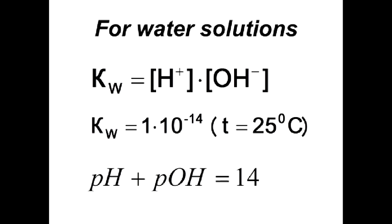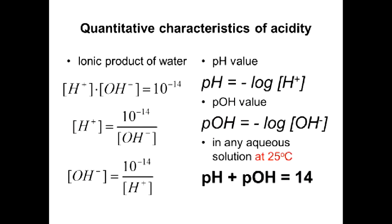The ionic product of water is constant at 25°C: Kw = 10⁻¹⁴. The product of hydrogen ion and OH⁻ ion concentrations is constant for all water solutions. So we can calculate hydrogen ion concentration if we know OH⁻ ion concentration and vice versa — but remember, Kw = 10⁻¹⁴ applies only at 25°C.